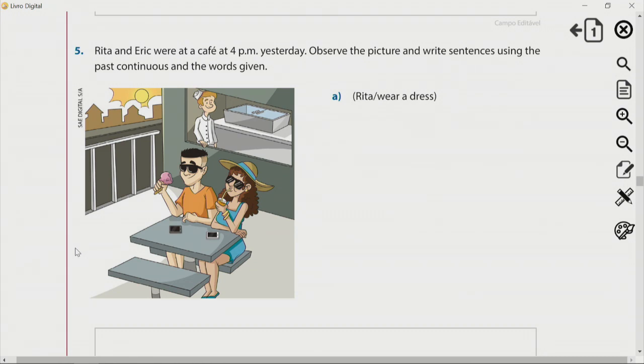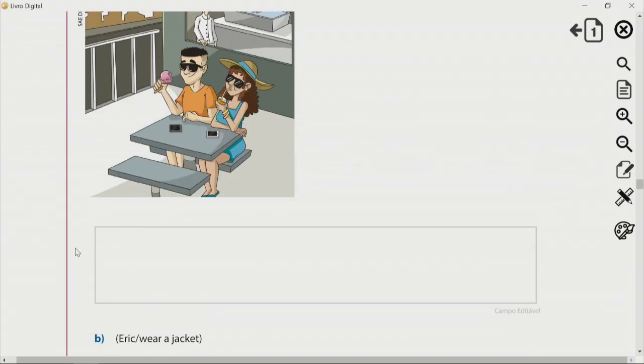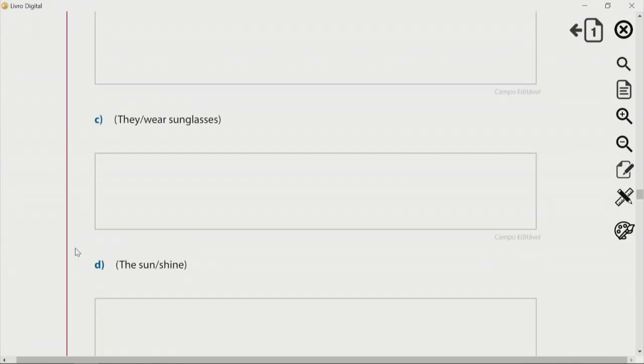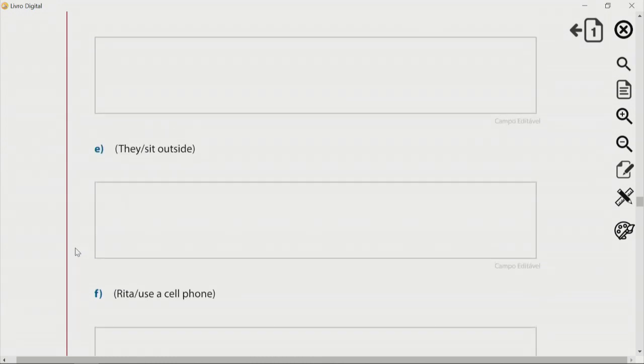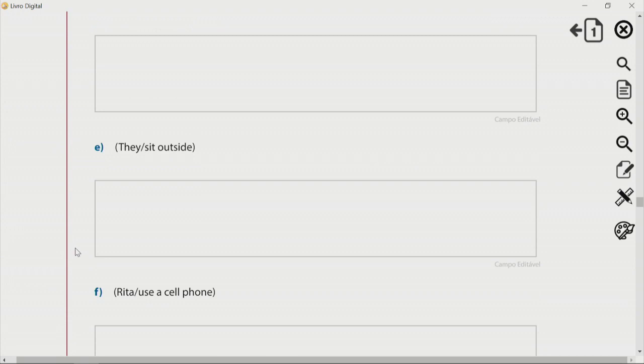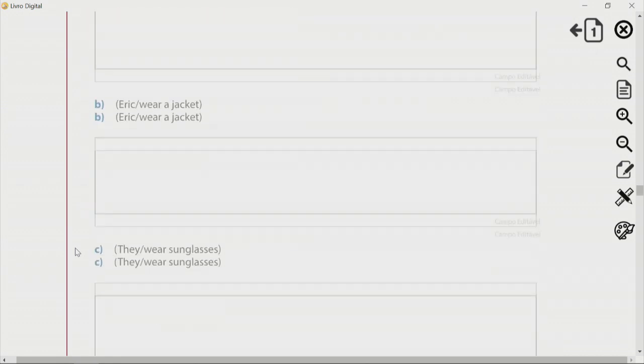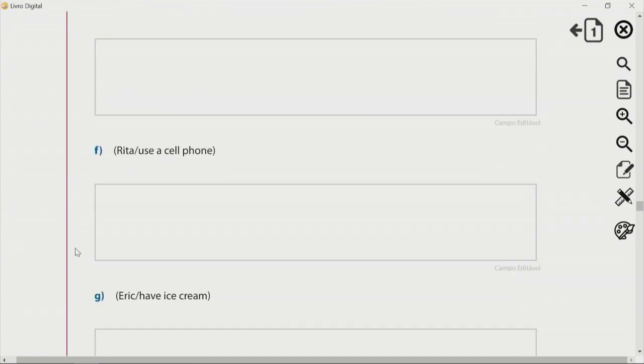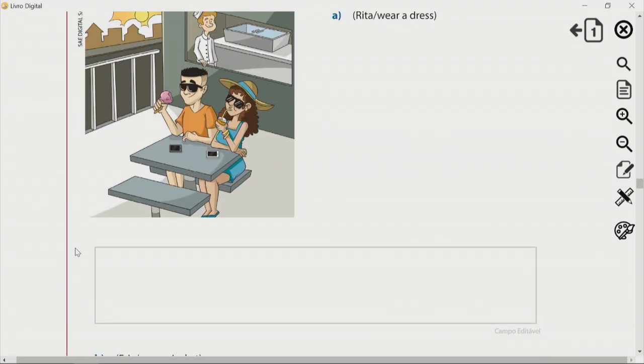observe the picture and write sentences using the past continuous and the words given. Tem aqui, então, os dois no café e o que eles estavam fazendo. Primeiro, o que a Rita estava vestindo. Aí, na letra B, o Eric, o que ele estava vestindo. Ele estava vestindo a jacket. Conseguem ver uma jaqueta aqui? Letters C, they sunglasses. Eles estão usando óculos. The sun shine. Dá pra ver o sol brilhando aqui. Letters E, they sit outside. Se eles estavam sentados do lado de fora. And, letter F. A Rita estava usando o telefone dela? Ela estava usando? And, finally, a letter G. Eric, ice cream. Ele estava tomando sorvete? E, letter H. Rita, drink milkshake. Ela estava tomando milkshake? Vejam a imagem e respondam todas as perguntas. Ok?